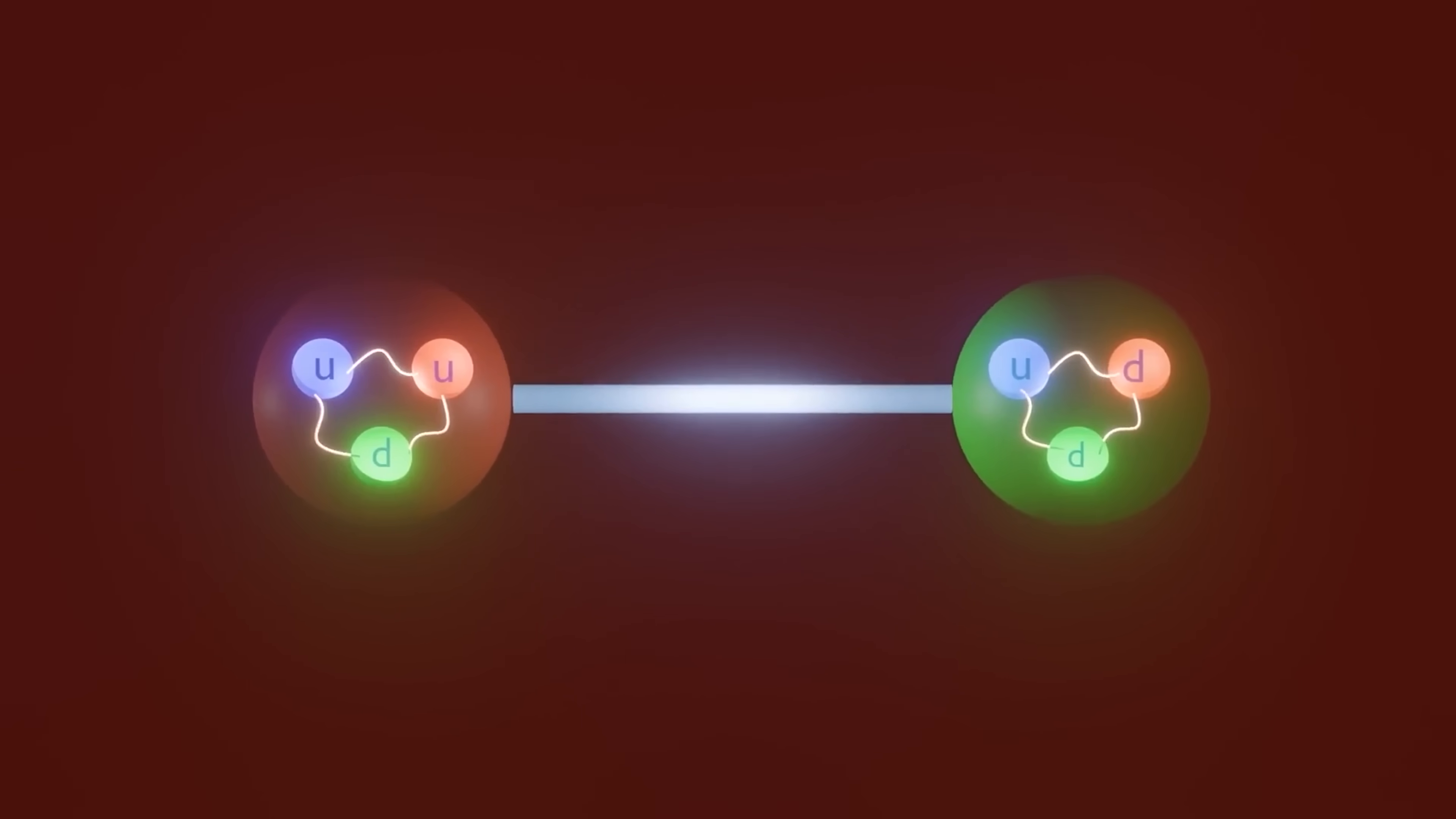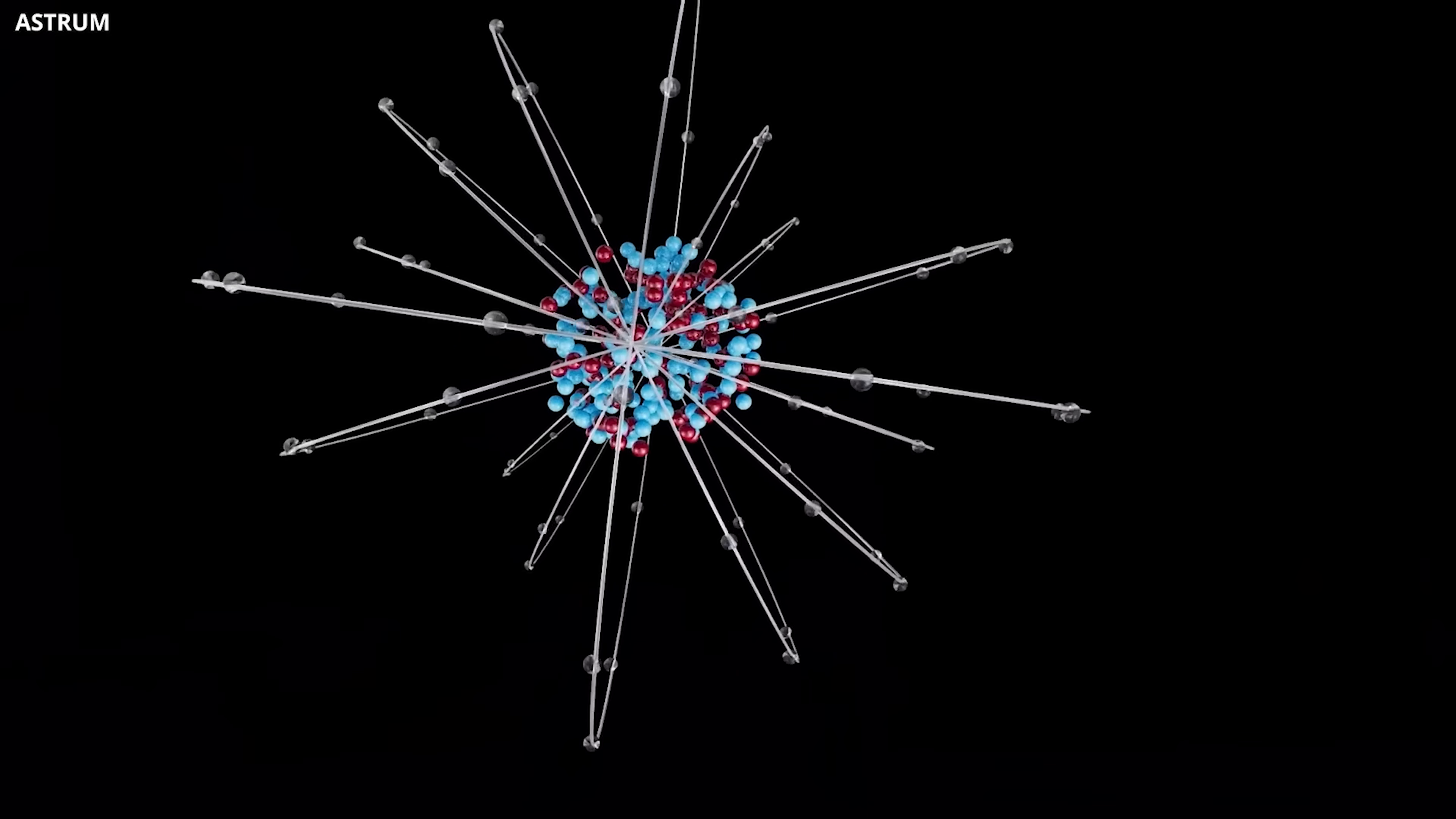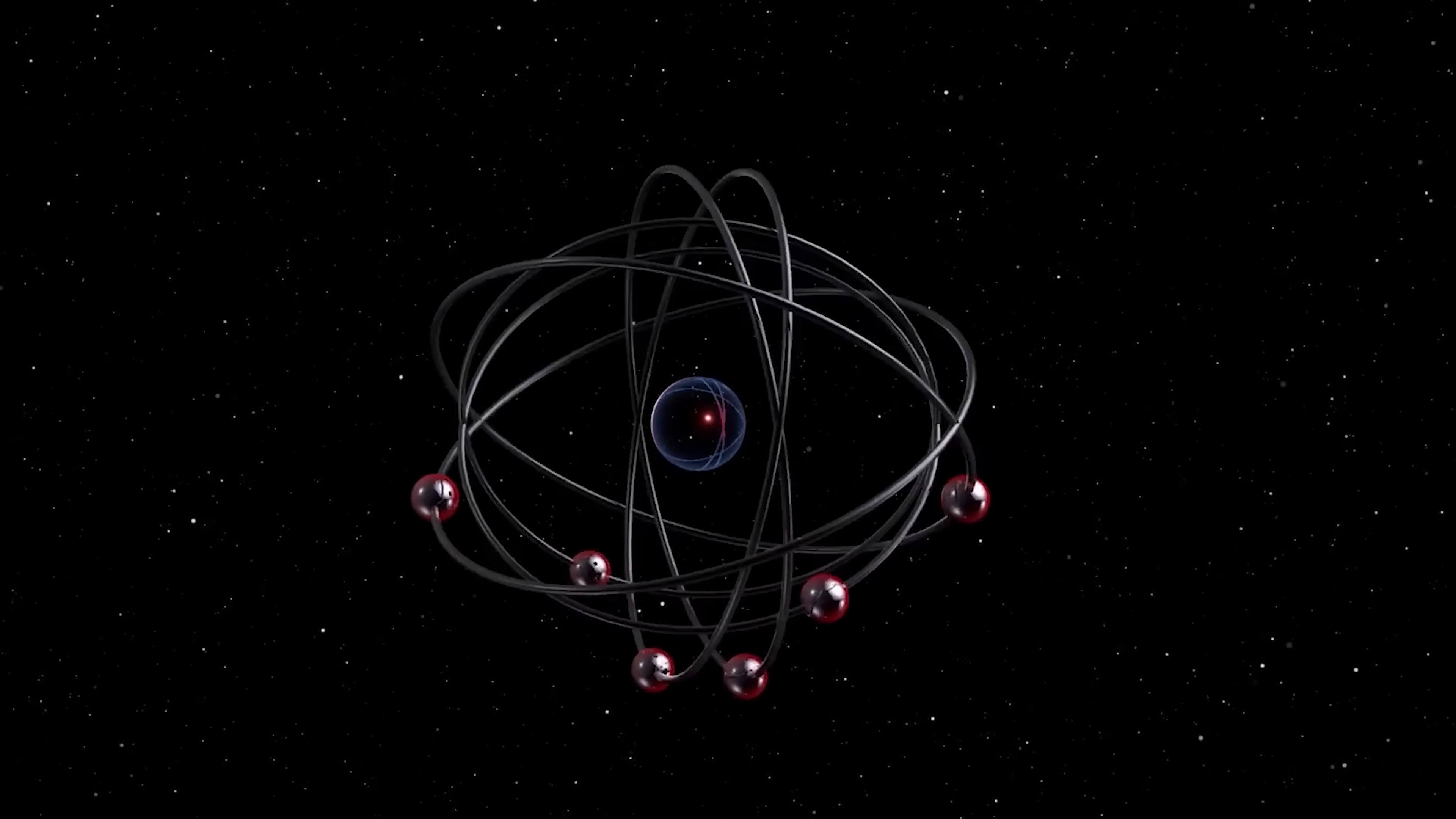To put it another way, imagine a game with two teams, matter and antimatter. But matter had a tiny, secret advantage, like getting one extra roll of the dice out of a billion. Over trillions and trillions of rounds, that tiny advantage guarantees a win. In the crazy first moments of the universe, this tiny asymmetry let matter win, leading to everything we see today.